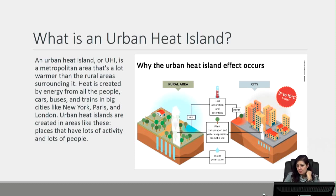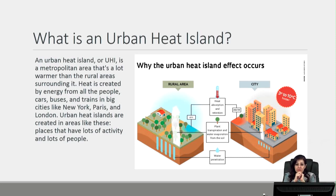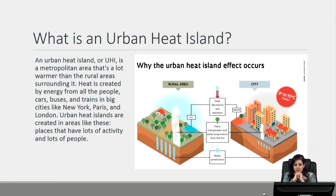What is the urban heat island effect? When we study environmental design, we need to relate it to the urban environment and climate in general. The urban heat island, or UHI, is a metropolitan area that is warmer than the rural areas surrounding it. Heat is created by energy from people, cars, buses, trains, and big cities like New York, Paris, and London especially. Urban heat islands are created in places with lots of activity and lots of people. In major metropolitan cities, temperatures are actually higher than rural areas by 3 to 10 degrees Celsius, which is significantly a big amount.